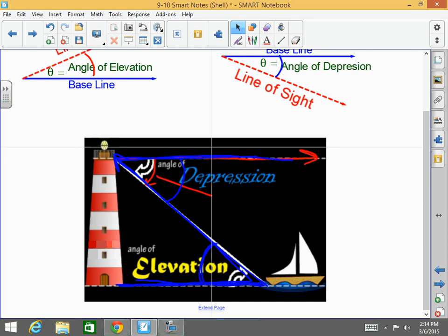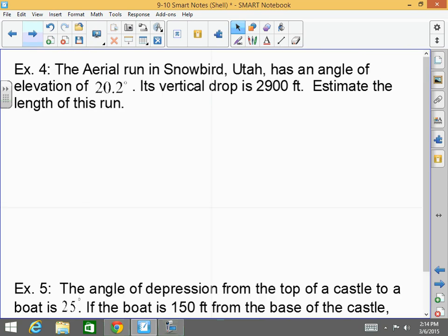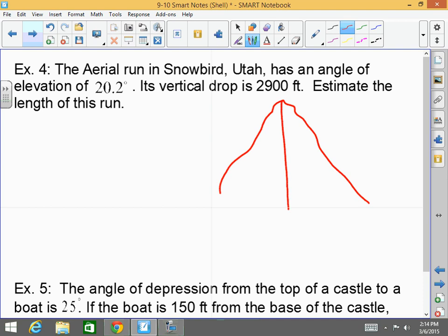So how does this work? The aerial run in Snowbird, Utah has an angle of elevation of 20.2 degrees. The vertical, its vertical drop is 2,900 feet. Estimate the length of the run. So here's the mountain, which has an elevation, a straight vertical drop of 2,900 feet. You're somewhere over here. Your baseline is the ground.